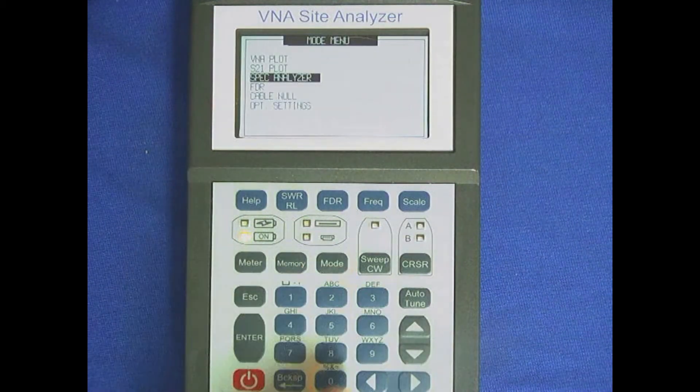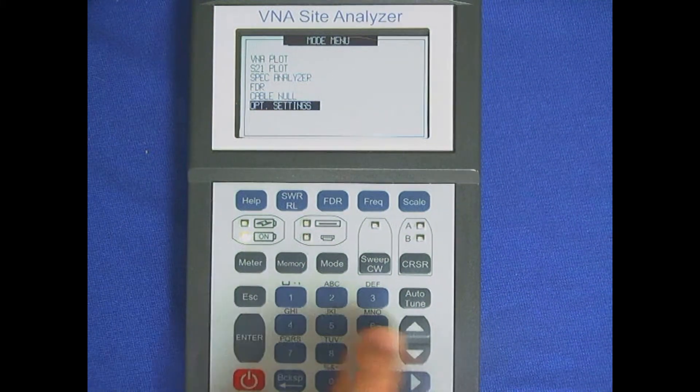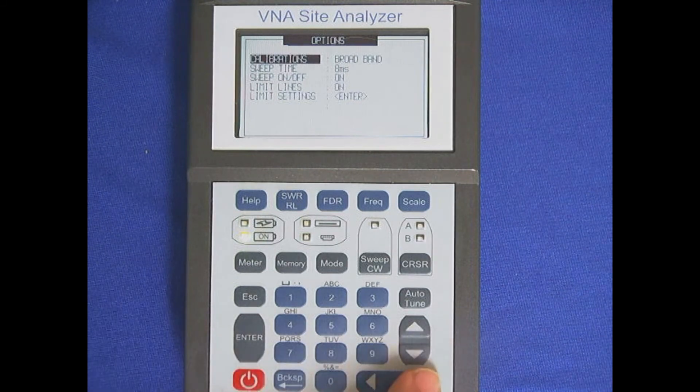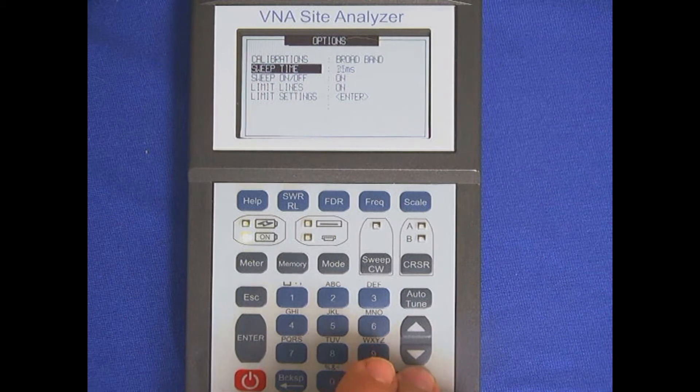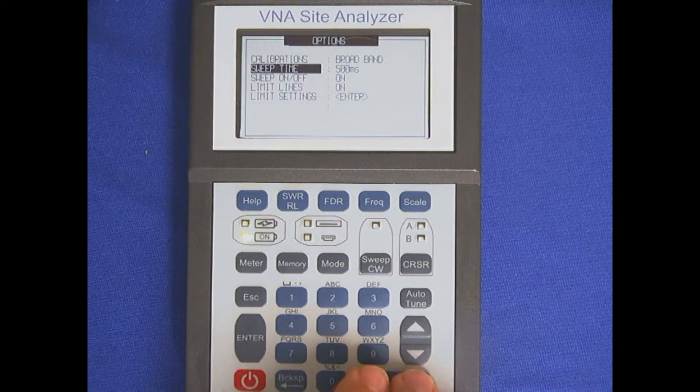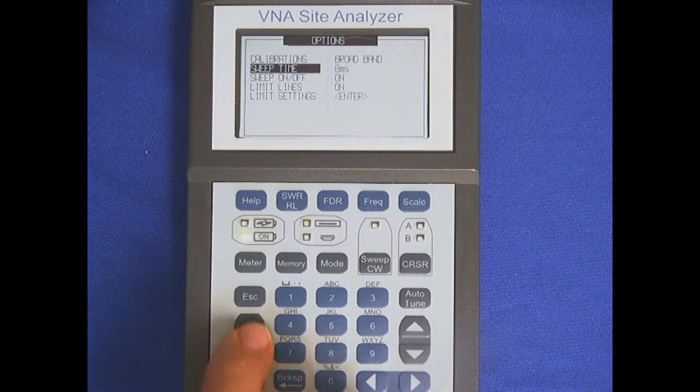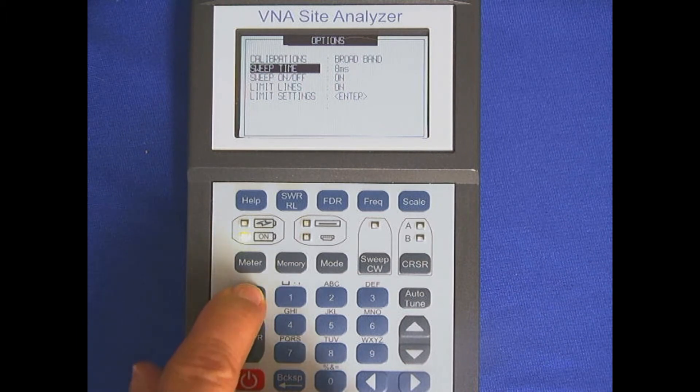Go to Mode again and select Options Settings to adjust your sweep time. Currently it's set at 8 milliseconds. It can be anywhere from 8 milliseconds up to 1 second. We'll leave it at 8 milliseconds for this test. Hit Escape.